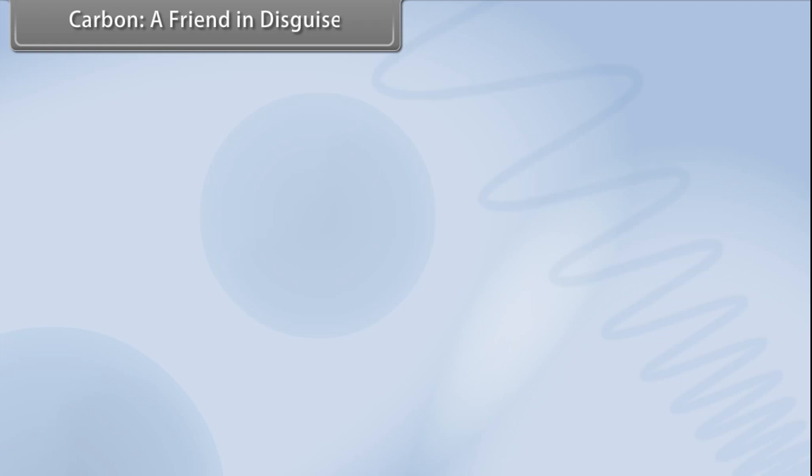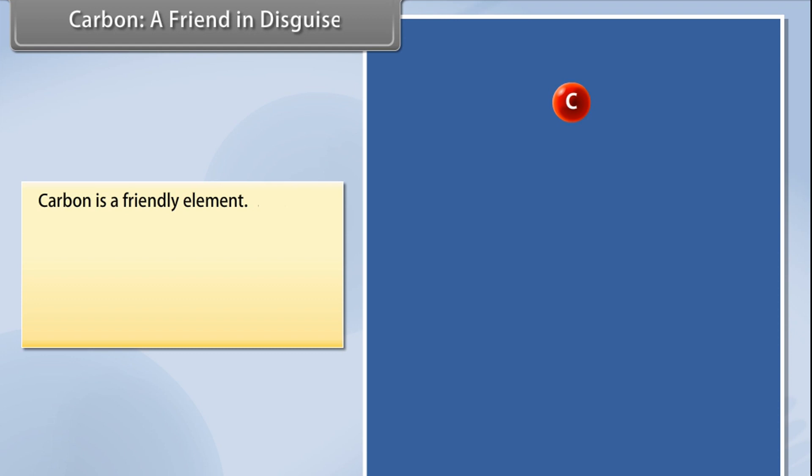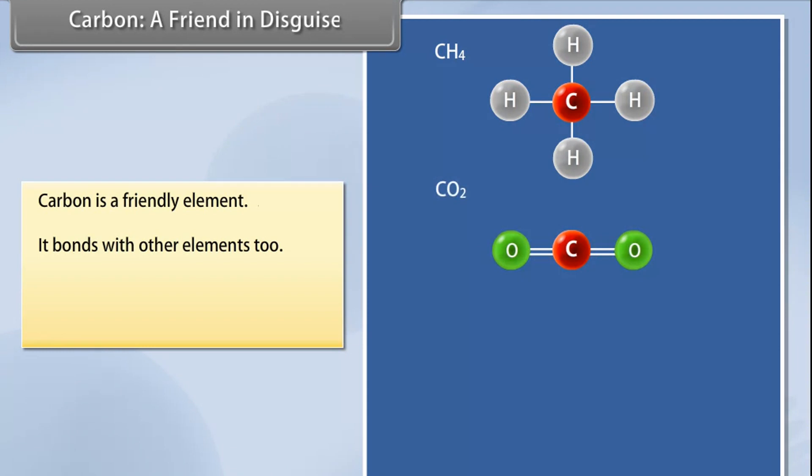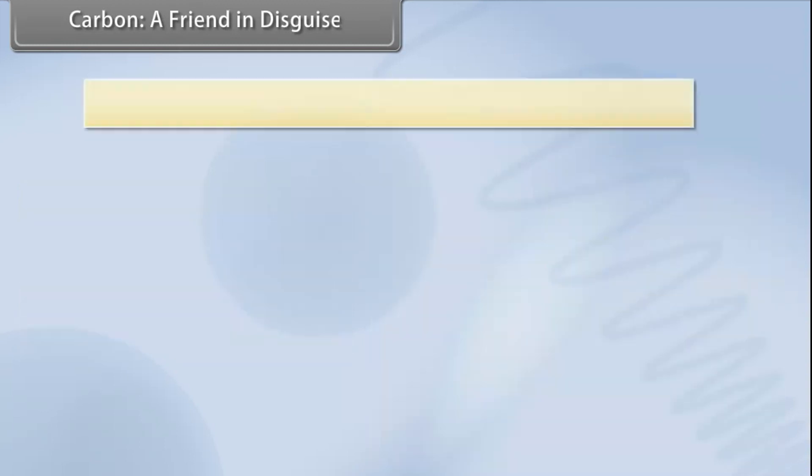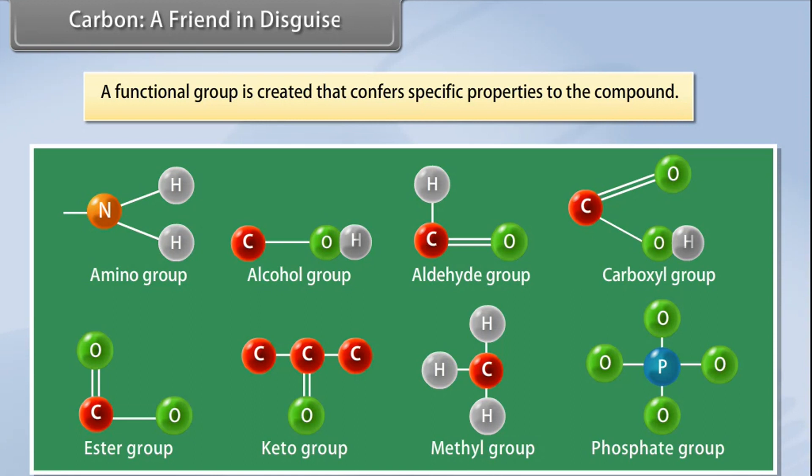Carbon: A friend in disguise. Carbon is a friendly element. It not only bonds with hydrogen but also with other elements such as halogens, oxygen, nitrogen, and sulfur. The compounds are formed in the same manner as with hydrogen. However, instead of hydrogen, the other element is used, and this element replacing hydrogen is called a heteroatom. A functional group is created that confers specific properties to the compound without considering the length and nature of the carbon chain.